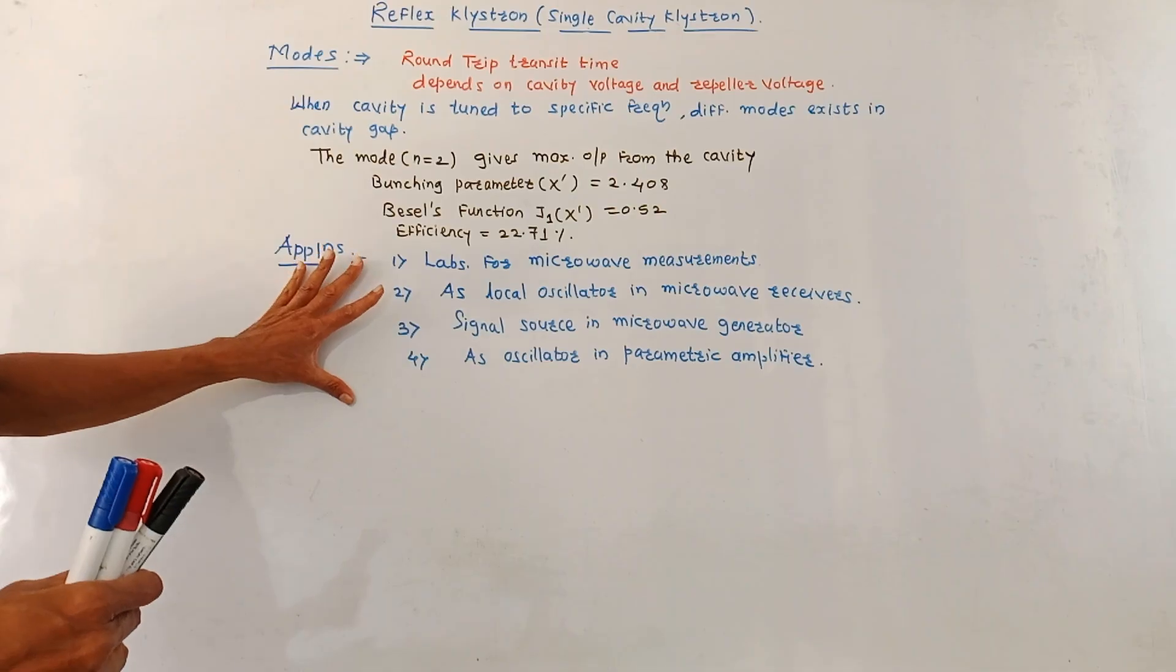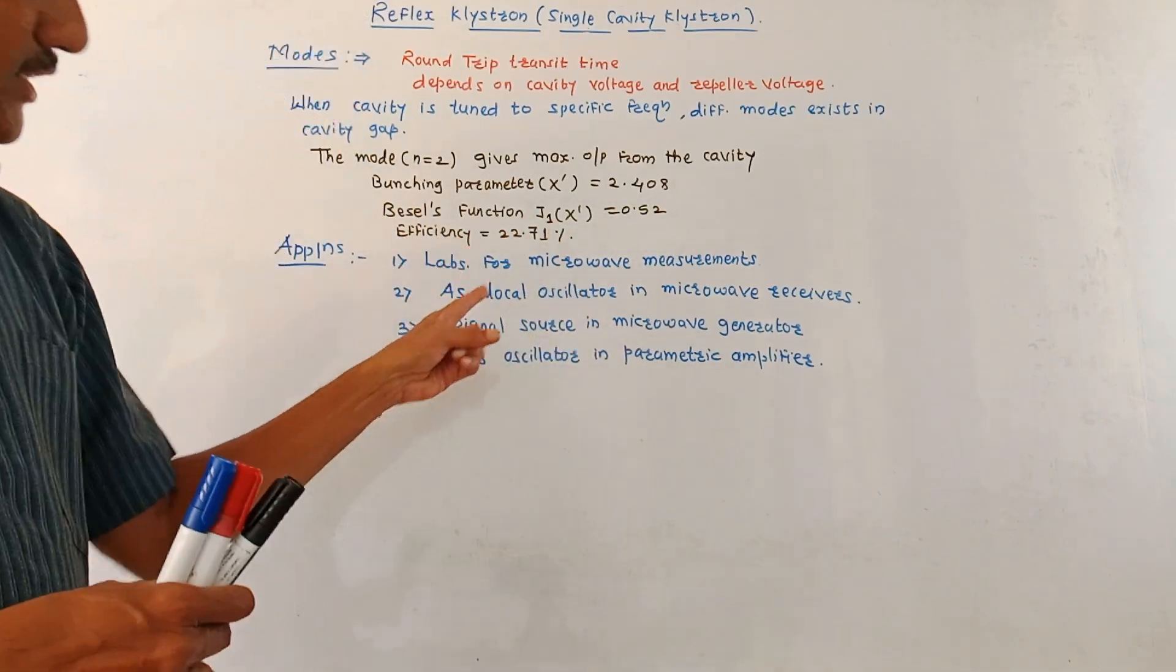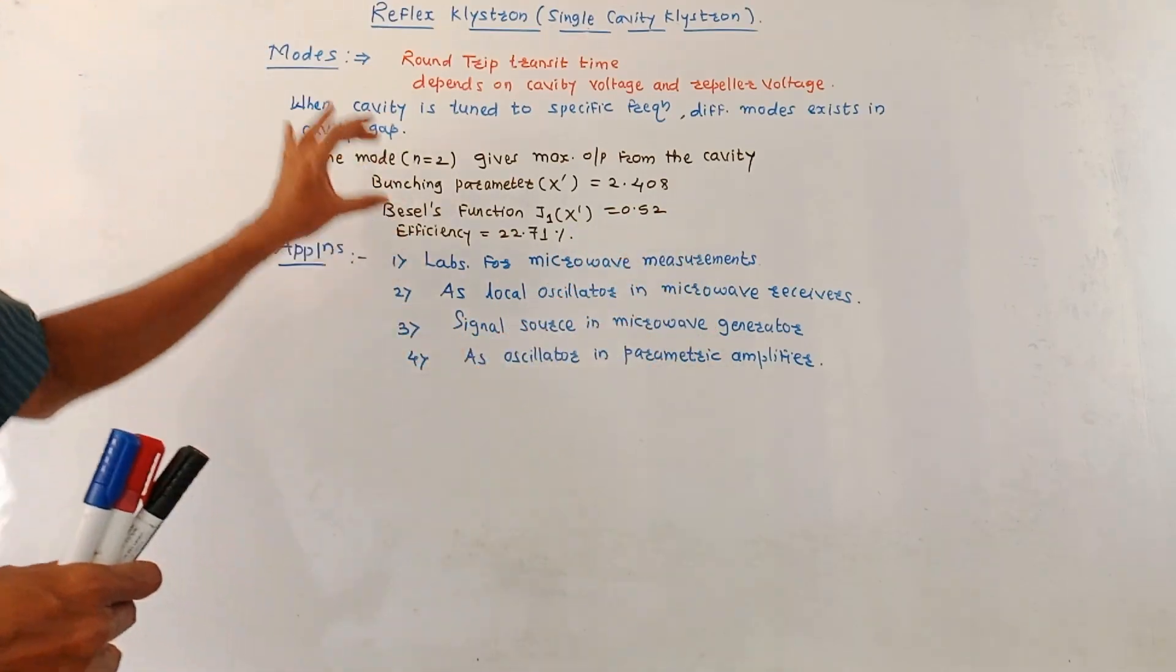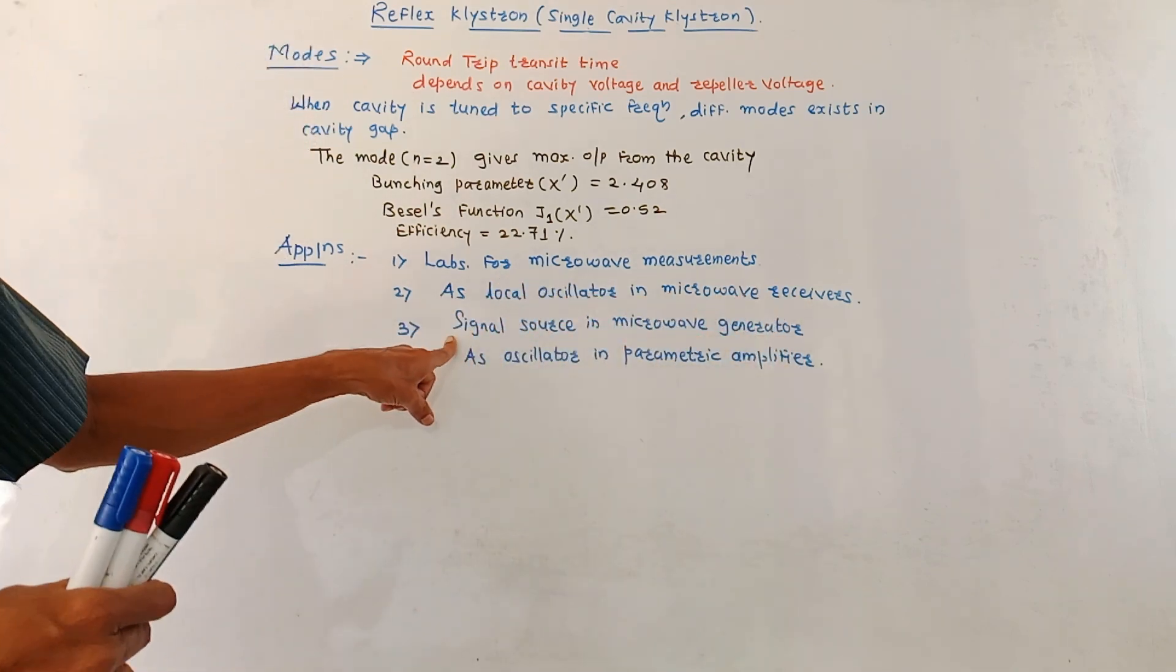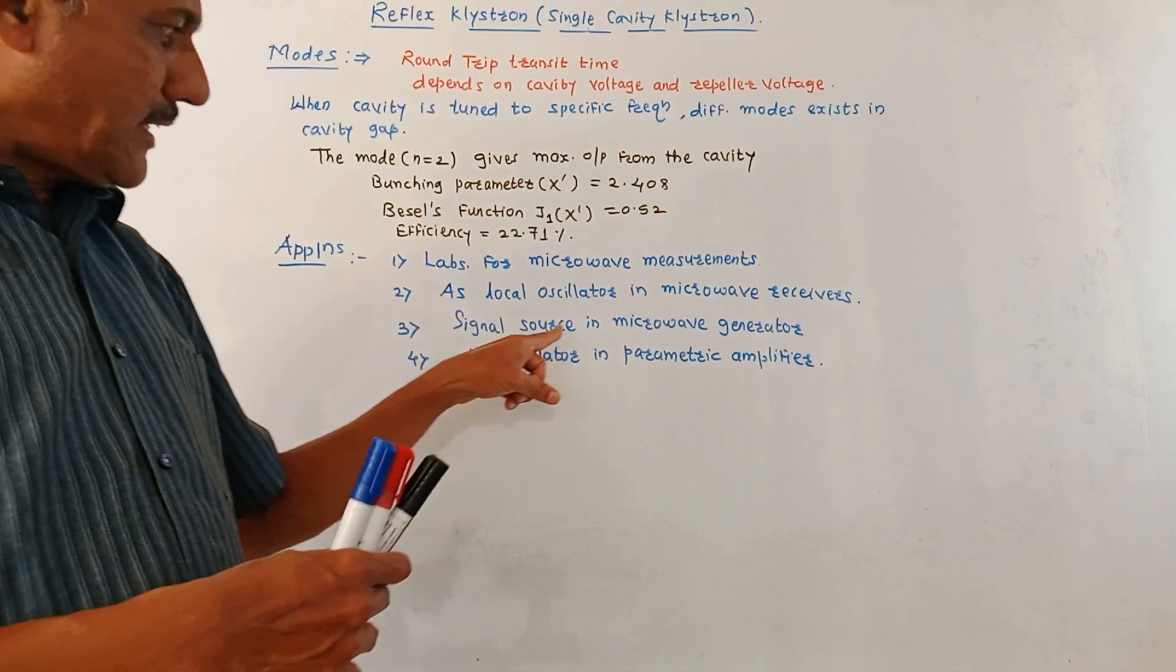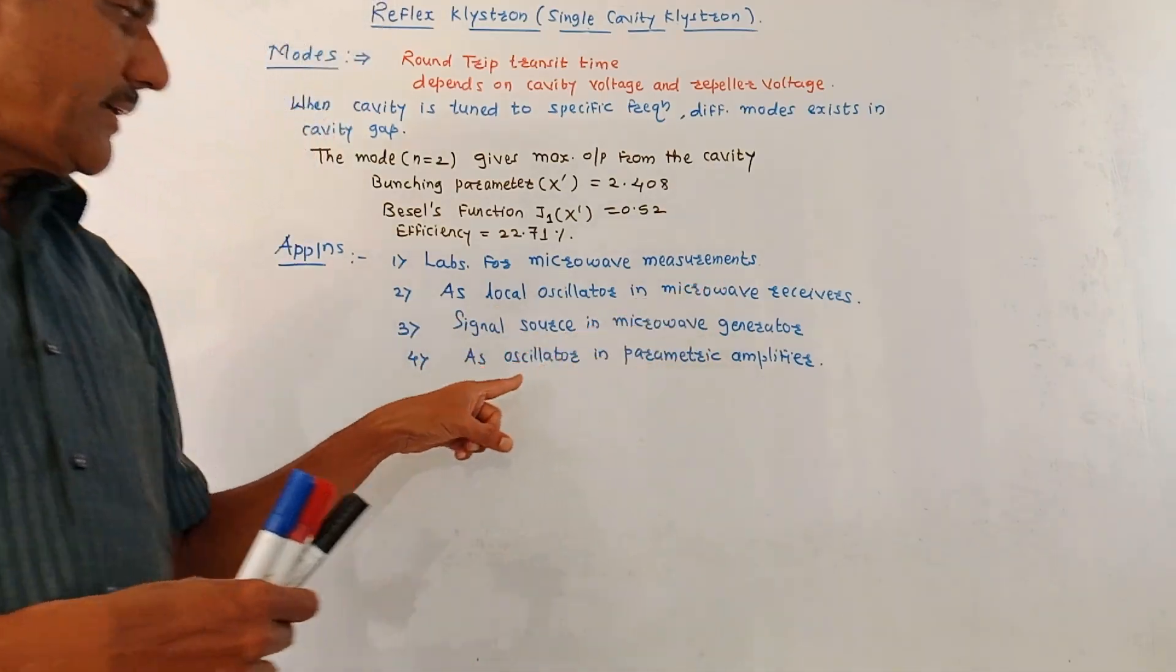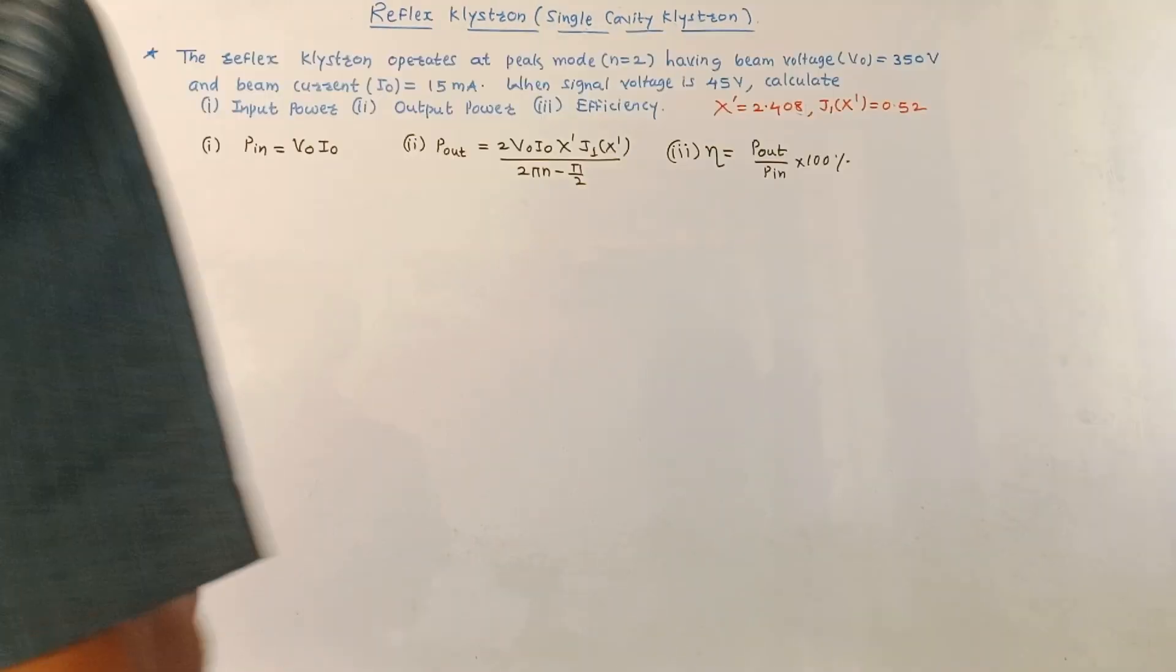Now, applications of the reflex klystron. Reflex klystrons are used in laboratories for measurement of micro signals, that is micro measurements. They can be used as a local oscillator in micro receivers, as a signal source in terms of a micro generator, and as an oscillator in parametric amplifiers.